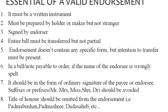The third essential is that it must be signed by the endorser, where the full name is not essential — initials may also be sufficient. If an illiterate person is making an endorsement, then some impression should be attested. As mentioned earlier, the signature can be made at any part of the instrument: back of the instrument, face, or on a slip of paper. A rubber stamp is not accepted, but after the signature of the endorser, if the endorser wants to write his designation, then a rubber stamp can be used.